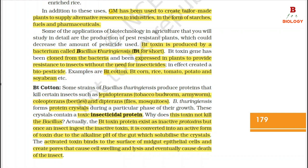Examples of Bt crops include Bt cotton, Bt corn, rice, tomato, potato, and soybean, etc.